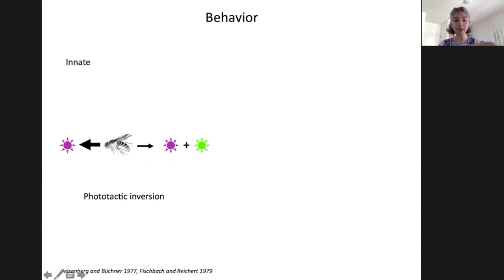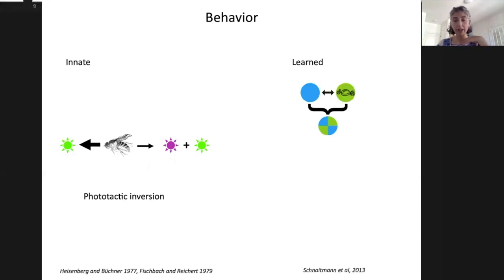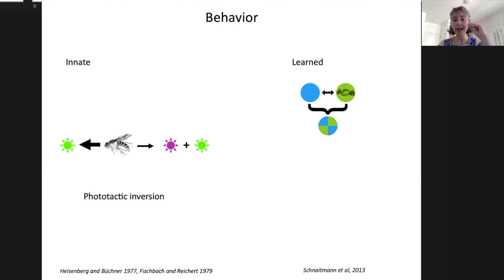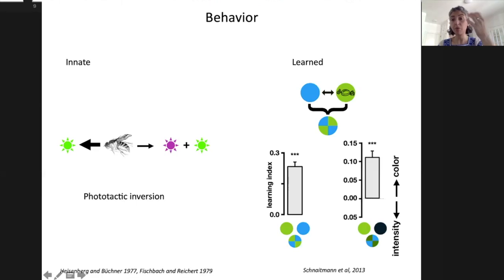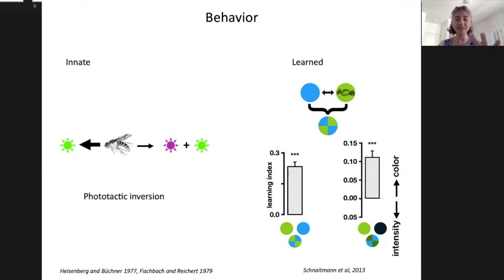The behaviors I just described are all innate. There's also been a little work on learning. It's been shown that flies can learn to distinguish blue versus green in an associative learning assay where one of the colors is paired with sugar, and they can do so independently of intensity, which is an important feature. There's still a large space of wavelengths, intensities, and assay types that needs to be explored.